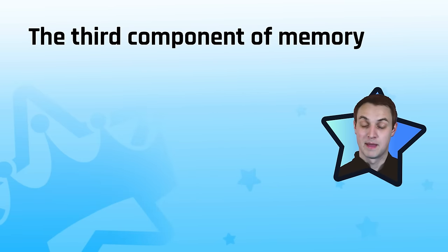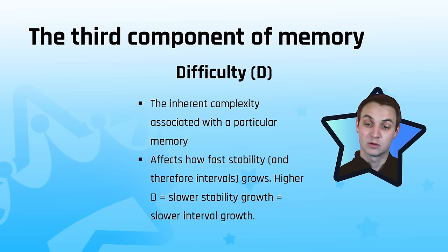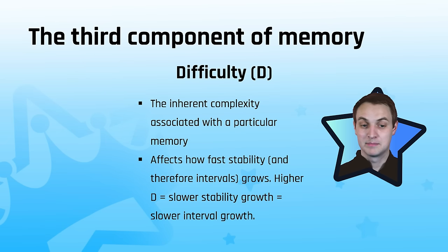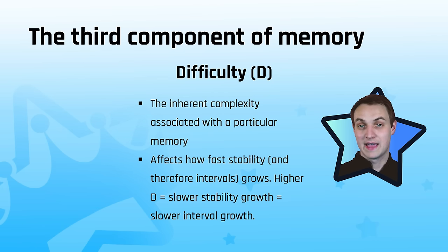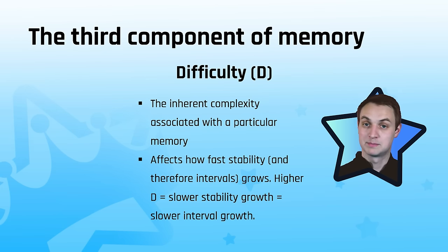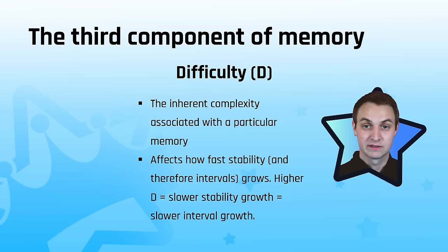There's also a third component of memory: difficulty. Anki's ease is kind of trying to do this, but it's not technically a difficulty factor when you look at the details. Difficulty represents the inherent complexity associated with a particular memory and affects how stability changes as you're reviewing things. If something is more difficult, stability will have slower growth, which makes sense — that memory won't be as stable because it's a more complex thing.